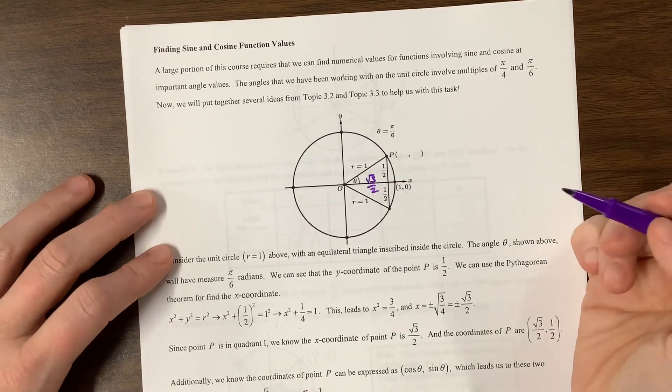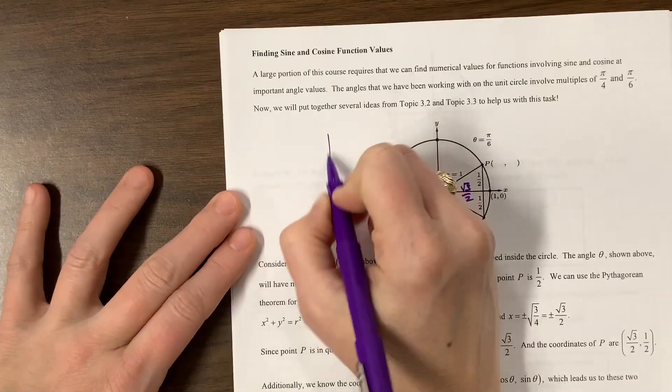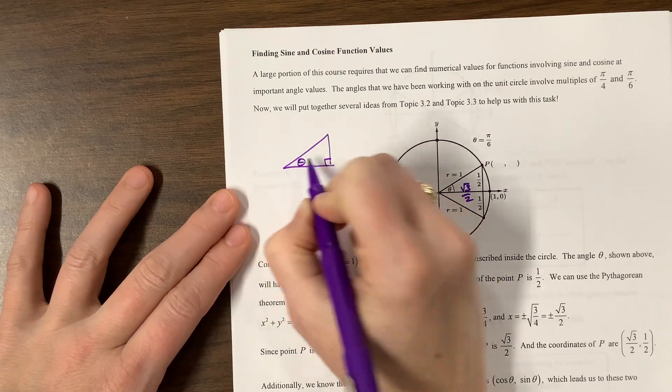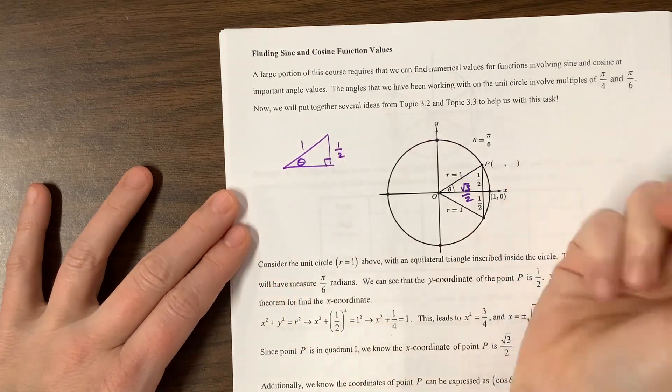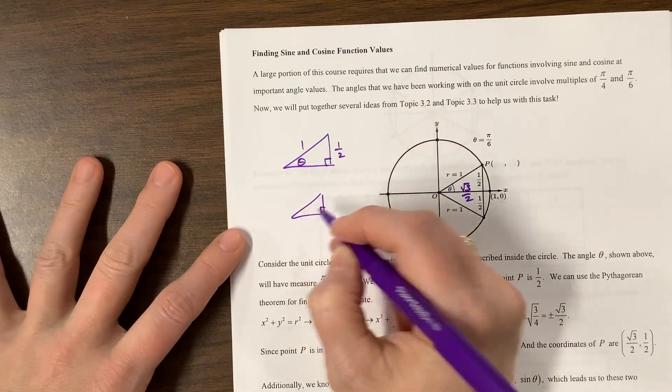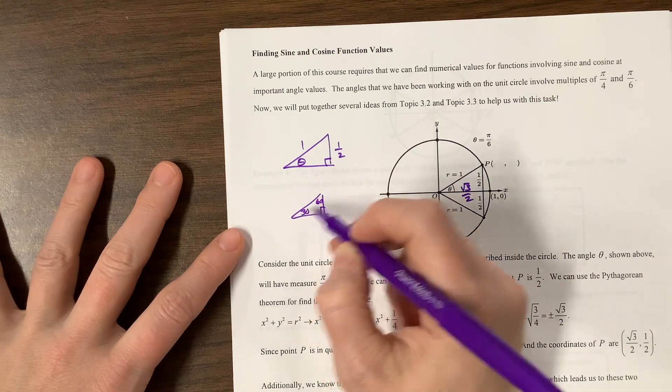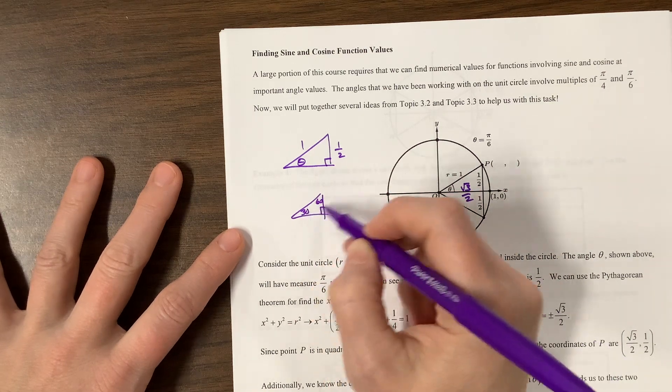We could do Pythagorean theorem to figure this out, or we could recognize that in my triangle, if I have an angle here, and across from it is 1 half, and the hypotenuse is twice as big, then what we have is a 30, 60, 90, or pi over 6, pi over 3 triangle.